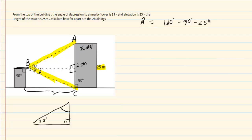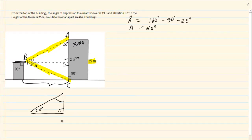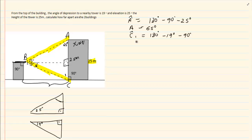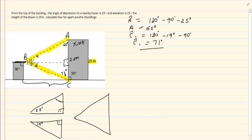Marking the triangle ABC, angle A equals 180 degrees minus 90 degrees minus 25 degrees, which gives us angle A equals 65 degrees. The best thing you can do is solve as many angles as possible — once you have angles, the rest becomes easy. For the bottom triangle, angle C1 equals 180 degrees minus 19 degrees minus 90 degrees, which equals 71 degrees. Taking the entire triangle as a whole, the combined angle is 25 plus 19, which equals 44 degrees.